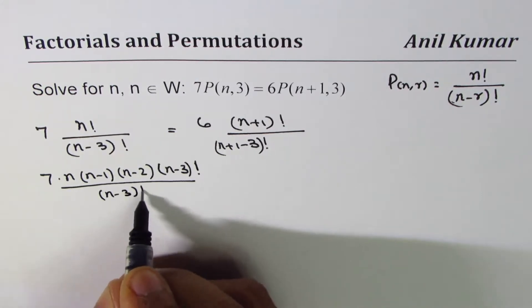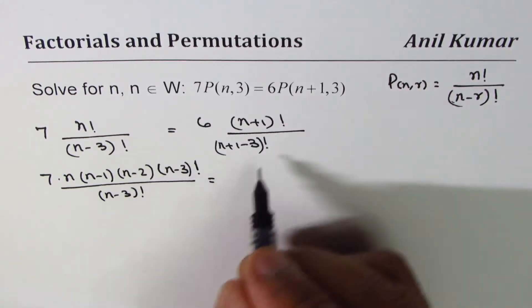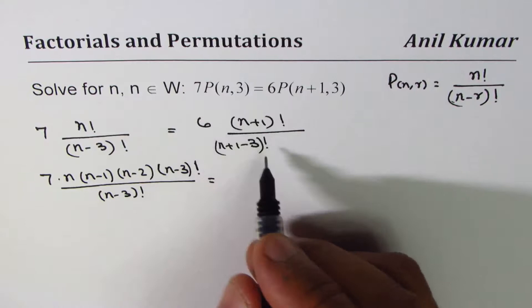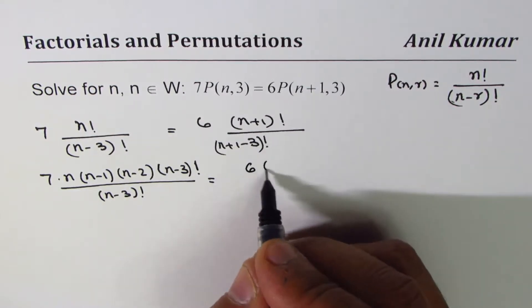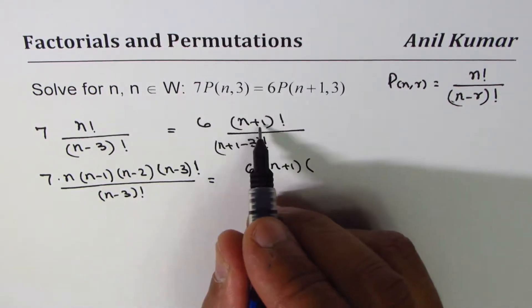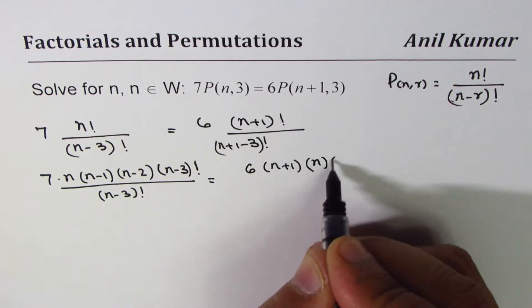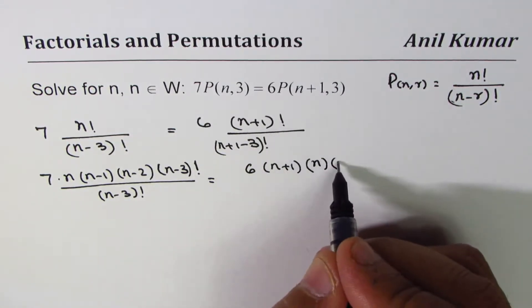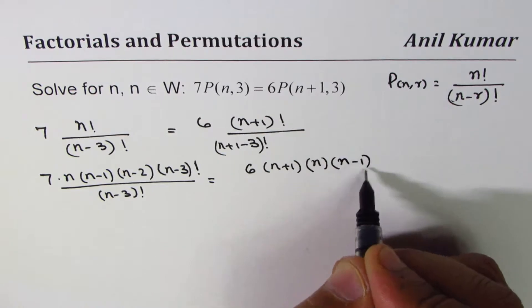On the right side we have 6 times (n+1) times n (since n+1 minus 1 gives us n), and then we have (n-1).